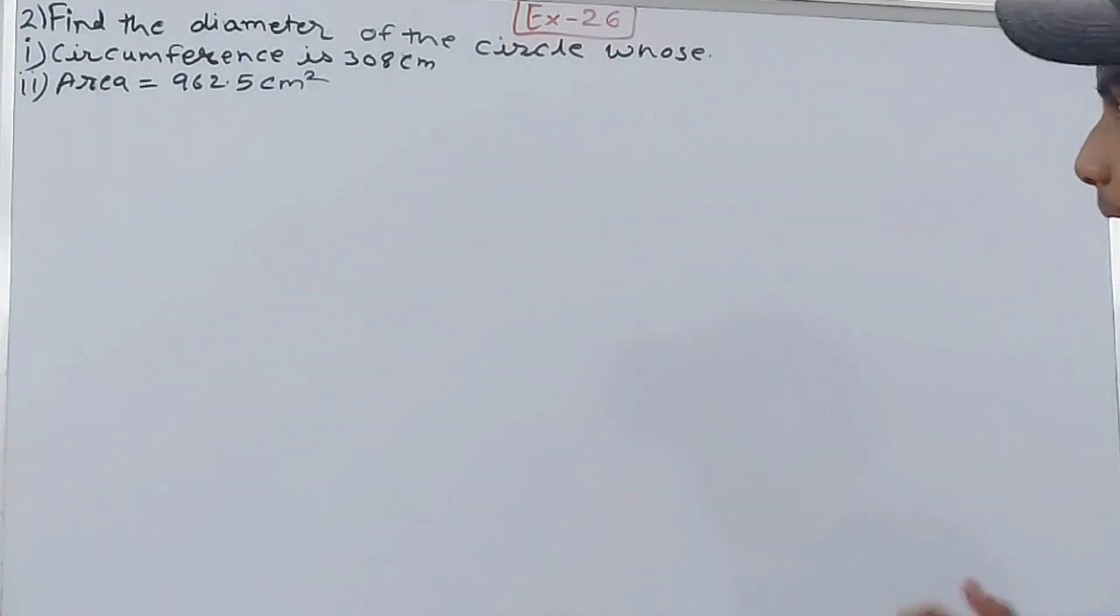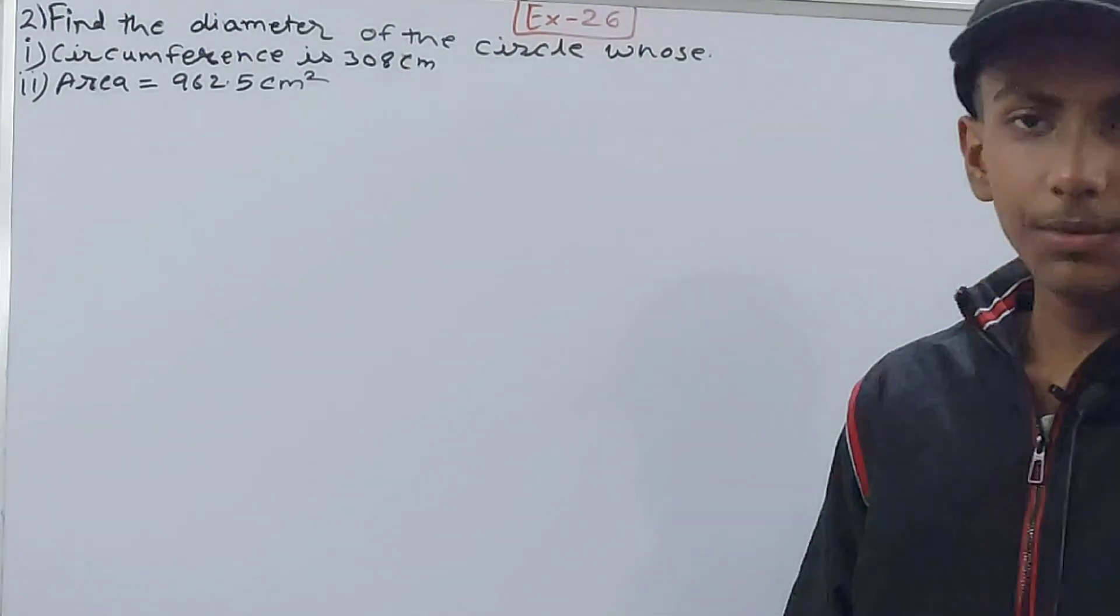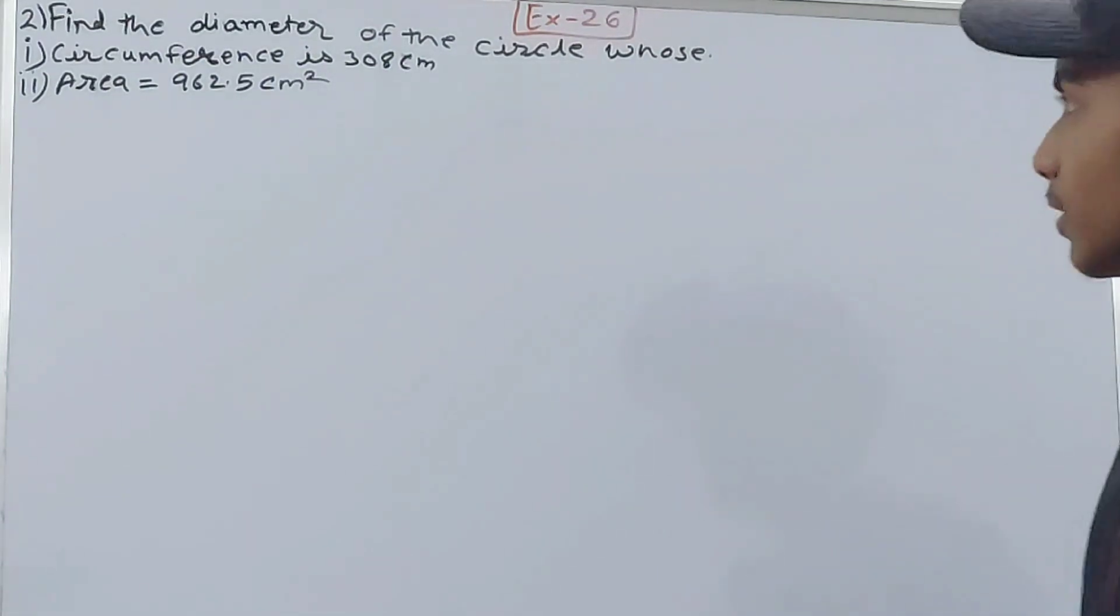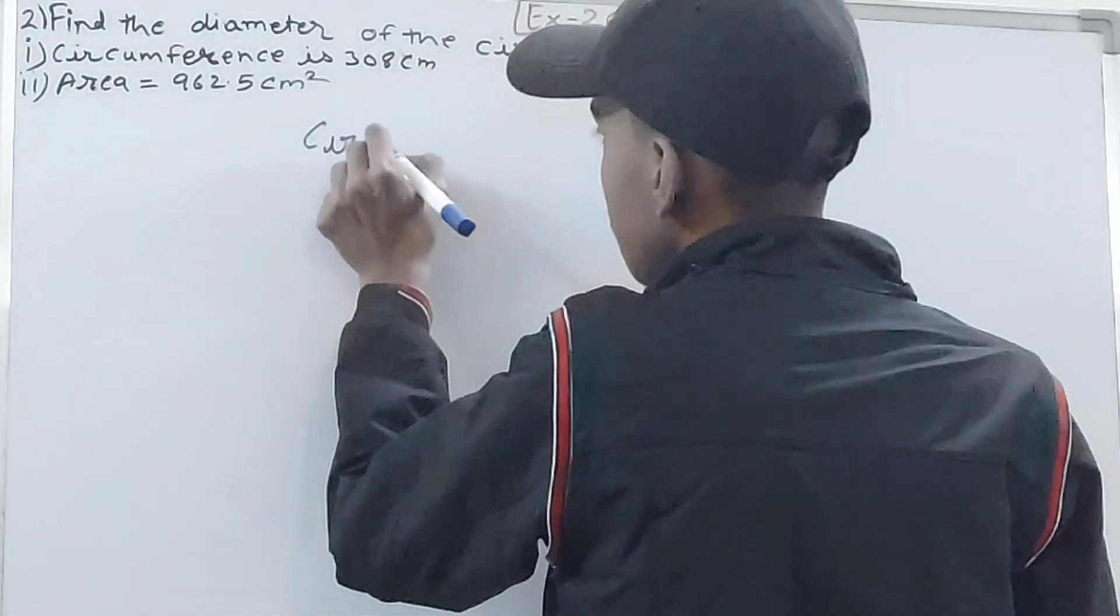This is to find the diameter of the circle whose circumference is 308 centimeters. Now we have to find the diameter of the circle whose circumference is 308 centimeters.